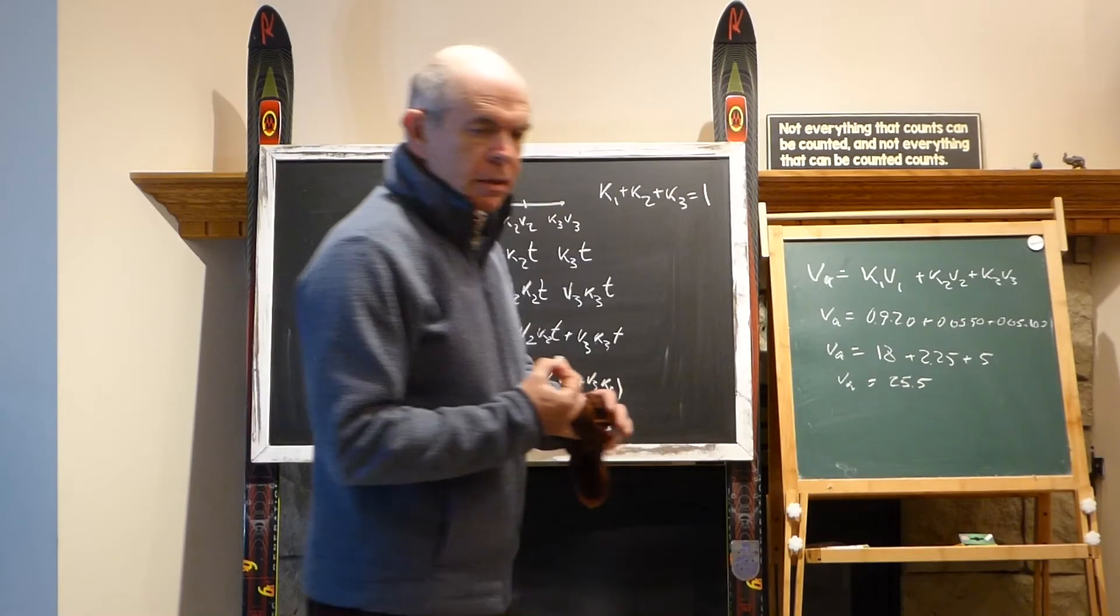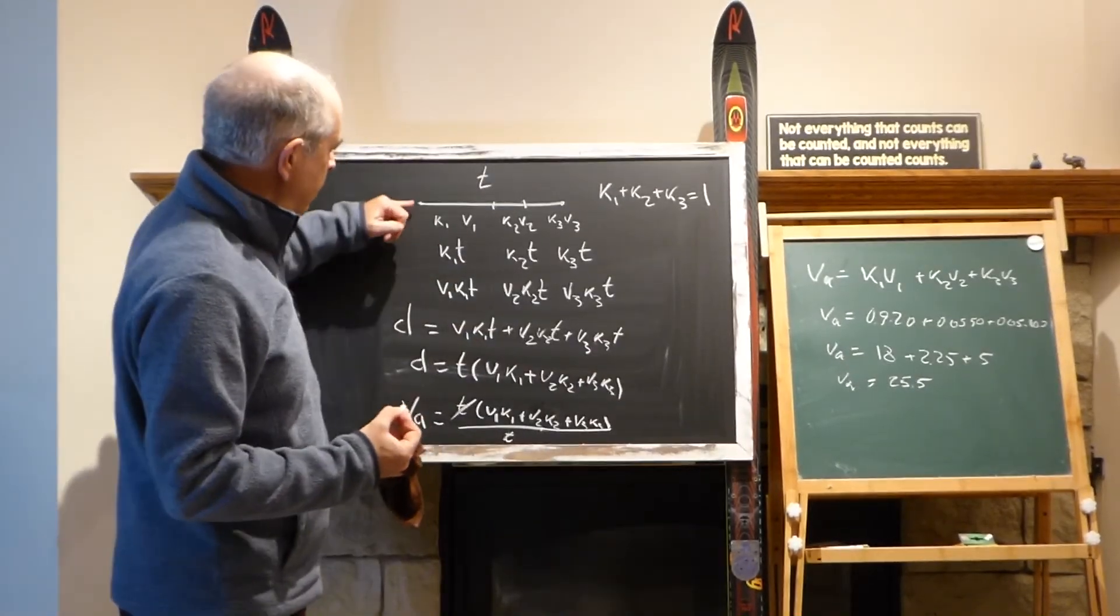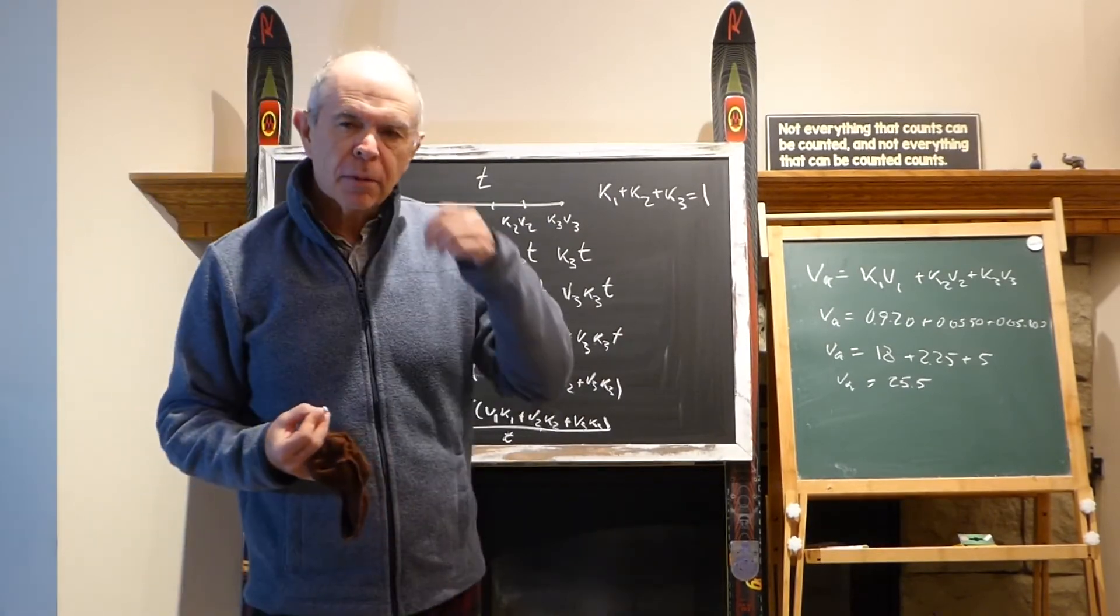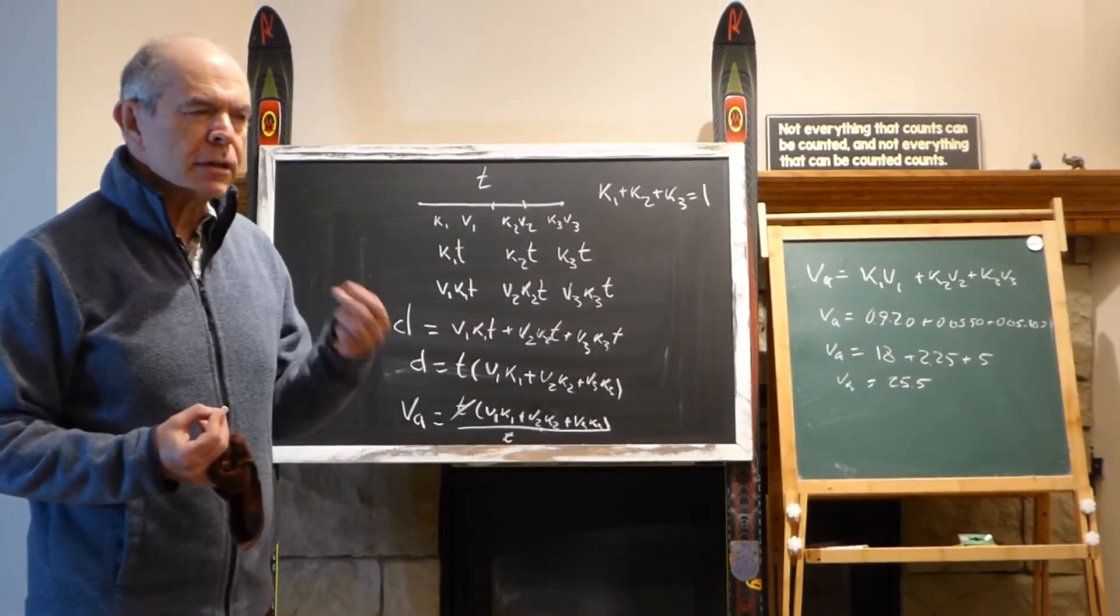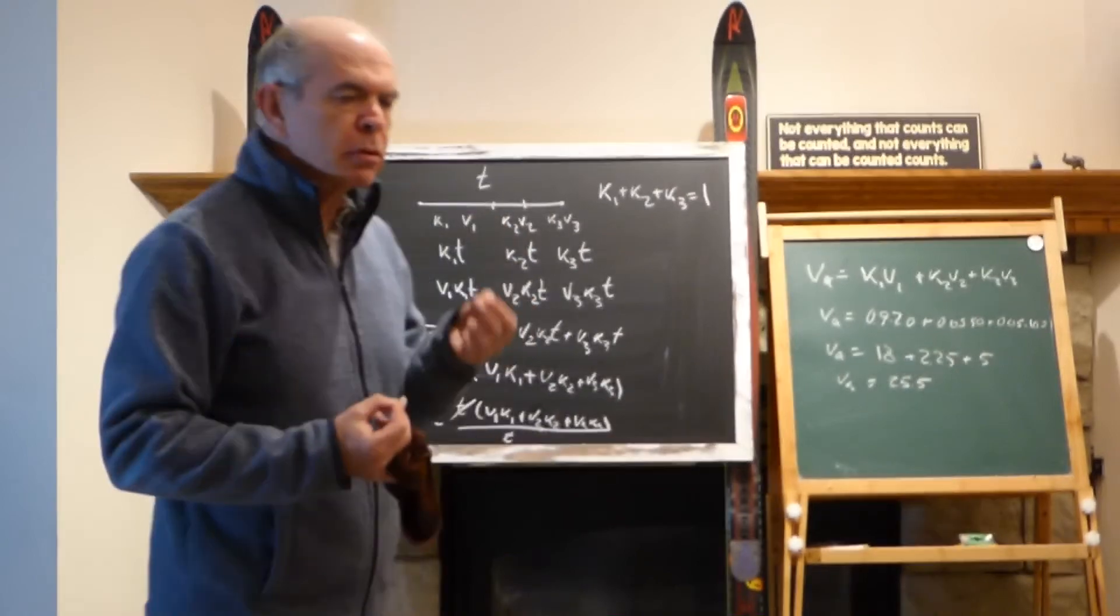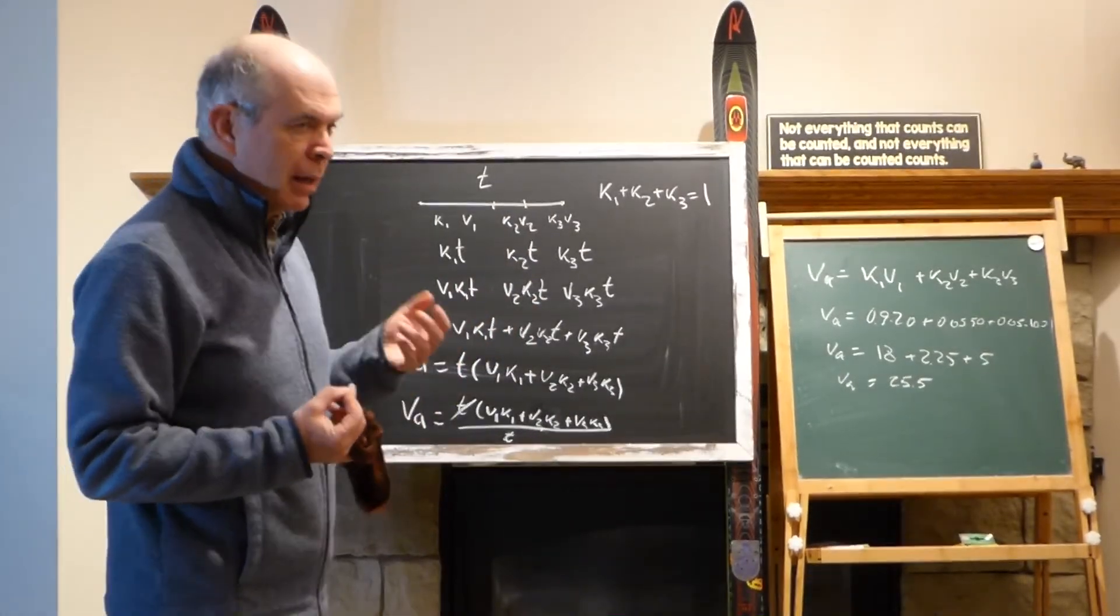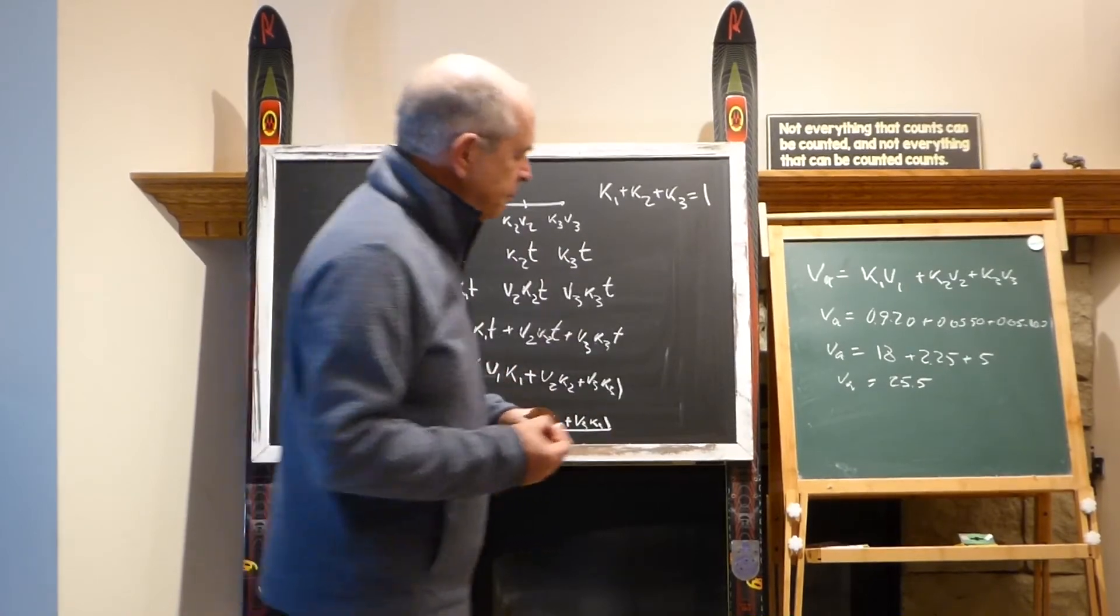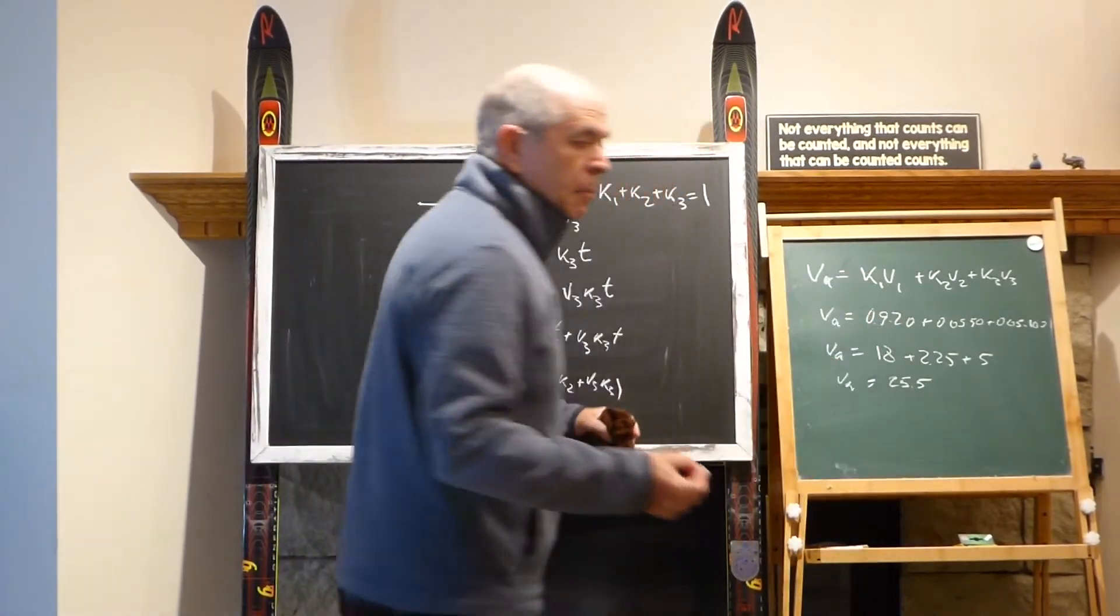That's what should be expected because 90% of the time we were traveling with the first speed. Because we were traveling with the first speed, it produces the most weight. You will hear about these weighted averages all over for the rest of your life. This is one of the examples.